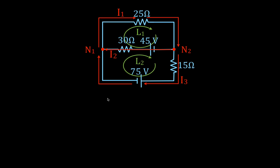Now we have done the things we need to do to apply the rules. We're going to start with the current rule at each of the nodes, N1 and N2. The current rule says that the sum of the currents entering the node and the sum of the currents leaving the node are going to be equal to zero.